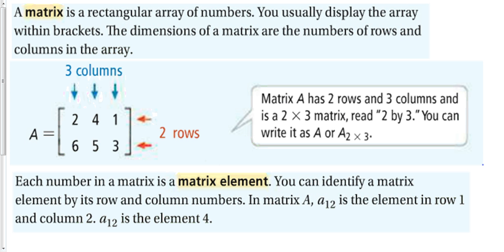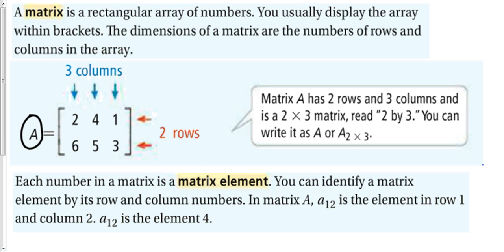A matrix is a rectangular array of numbers. We usually display the numbers within brackets. The dimensions of a matrix are the number of rows and columns. Rows go left to right — like a movie theater. Columns go up and down — like columns holding up a house. Matrix A right here has two rows and three columns, so it is a two by three matrix. You read it as 'two by three,' not 'two times three.' We use the multiplication sign to write dimensions but read it as 'by.'